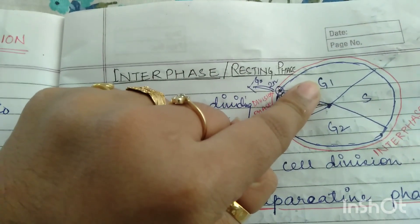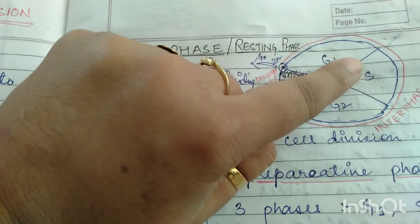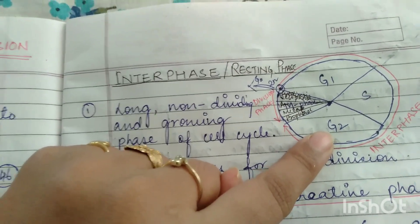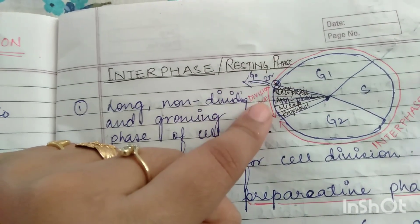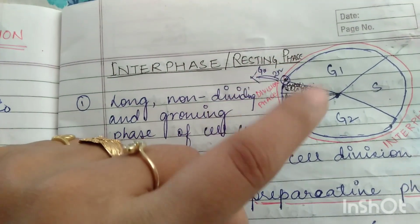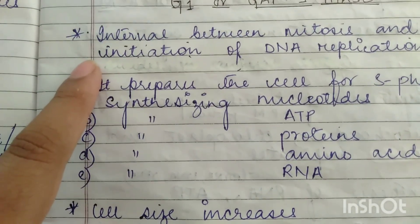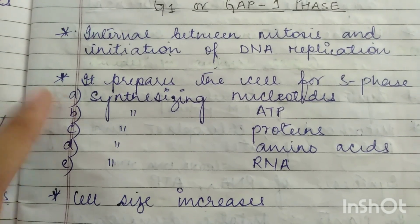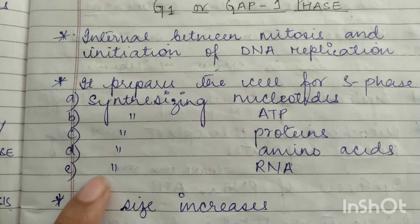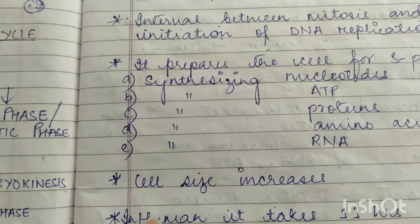After G1, once the cell enters S phase, it starts replicating its DNA. Once replication takes place, the cell enters G2 phase. In G2, the cell undergoes preparation for the main division which takes place at M phase — the mitotic phase, divided into karyokinesis and cytokinesis. Karyokinesis is studied under prophase, metaphase, anaphase, and telophase. In G1 phase, the cell prepares itself for S phase. It prepares by synthesizing nucleotides, ATP, proteins, amino acids, and RNA. As synthesis of all this material takes place, the cell size increases. In humans the G1 phase takes 11 hours.